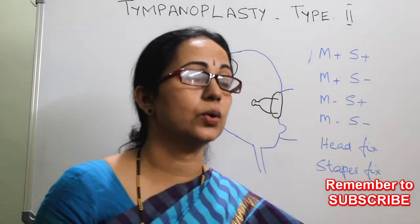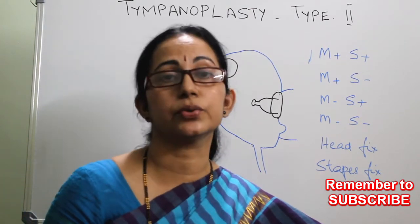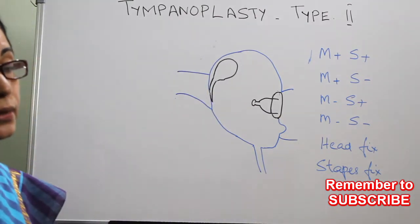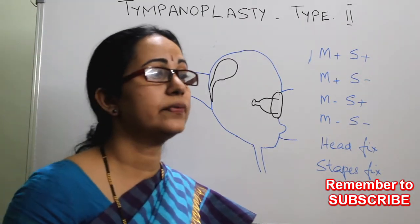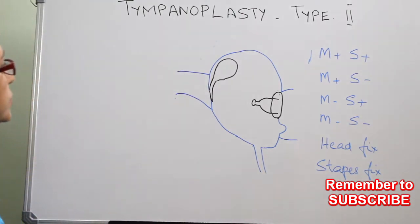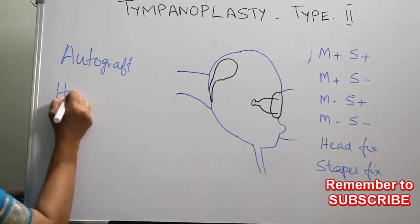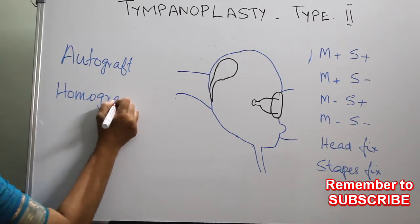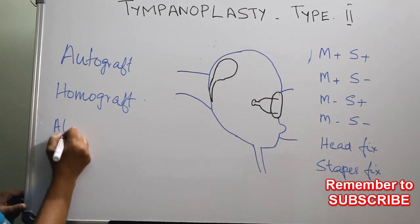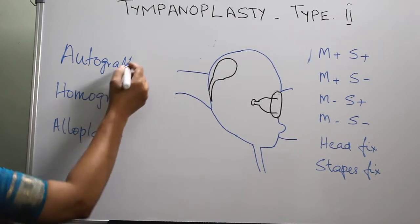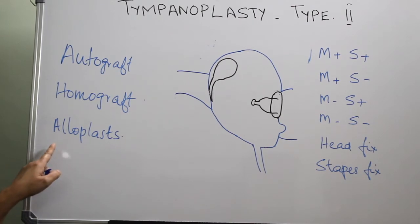In all these cases the missing ossicle has to be replaced, either by using a graft or using prostheses. As in myringoplasty, here also we can use different types of grafts. We can use an autograft from the same patient, a homograft from another patient or person, and also an alloplast. Homograft and autograft are biological materials and alloplasts are prosthetic synthetic materials.